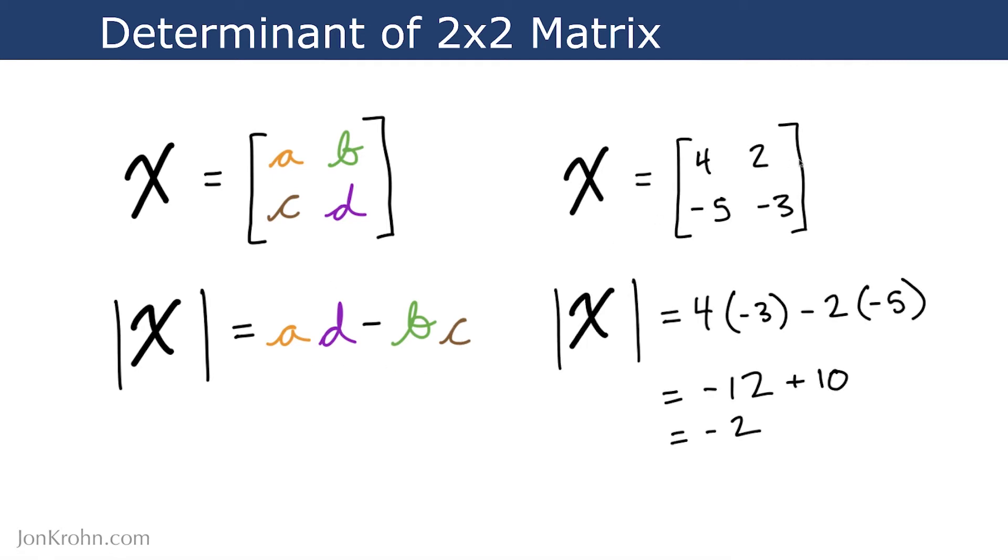Let's look at some real numbers to get a sense of that. So let's say this is our matrix X. Then the determinant is 4 times negative 3, A times D, minus B times C, minus 2 times negative 5. So 4 times negative 3 minus 2 times negative 5 is just the same as A times D minus B times C.